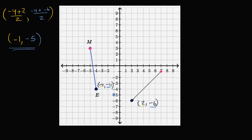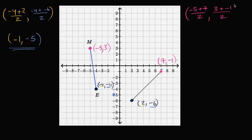Now let's find the midpoint between M and its corresponding image point. The coordinates of M are x equals negative five and y equals three. The coordinates of the image point are x equals seven and y equals negative one. The x coordinate of the midpoint is negative five plus seven over two, and the y coordinate is three plus negative one over two. Negative five plus seven is positive two, over two is one. Three plus negative one is positive two, over two is one. So the point one comma one is the midpoint between these two.